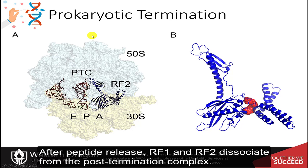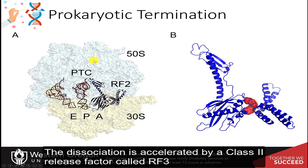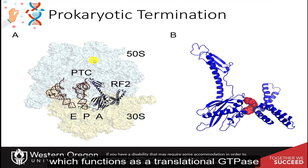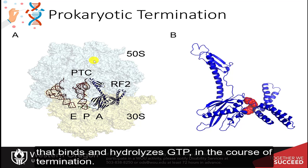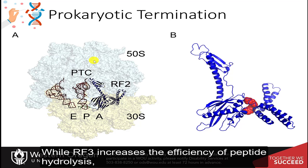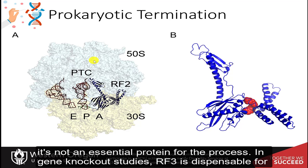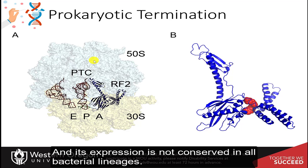After peptide release, RF1 and RF2 dissociate from the post-termination complex. The dissociation is accelerated by a class 2 release factor called RF3, which functions as a translational GTPase that binds and hydrolyzes GTP in the course of termination. While RF3 increases the efficiency of peptide hydrolysis, it's not an essential protein. In gene knockout studies, RF3 is dispensable for the growth of E. coli, and its expression is not conserved in all bacterial lineages.